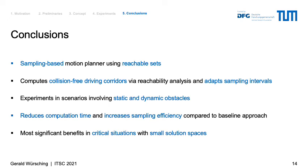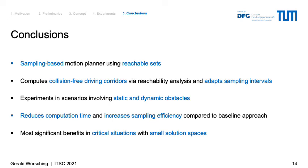In conclusion, we propose a concept for a sampling-based motion planner using reachable sets. Our approach first computes collision-free driving corridors via reachability analysis and then adapts the sampling intervals for our motion planner to the dynamically changing environment. We evaluated our approach in numerical experiments with scenarios involving both static and dynamic obstacles. Our concept significantly reduces computation time and increases sampling efficiency compared to the baseline approach, with the benefits most noticeable in critical situations with small solution spaces, which are typically challenging for sampling-based planners to handle.